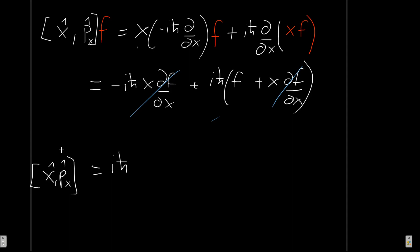That example shows the basic idea of how to determine a commutator. Commutators may be easier or harder, but it is very important to use a test function whenever you want to determine one. That is it for this video — in the next one we will finally derive the generalized uncertainty principle.